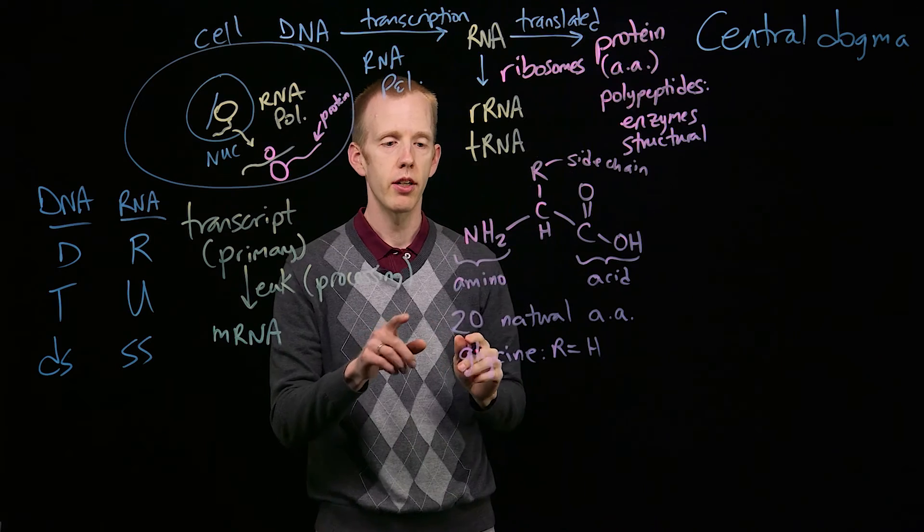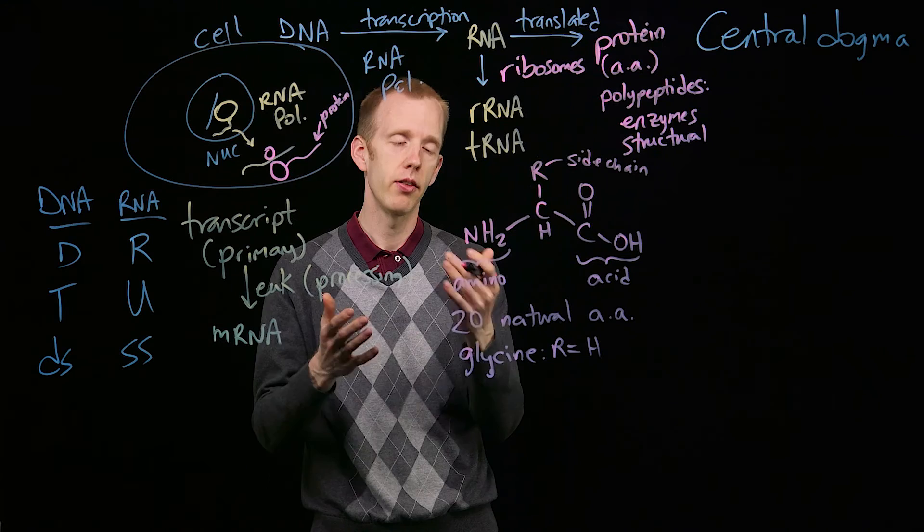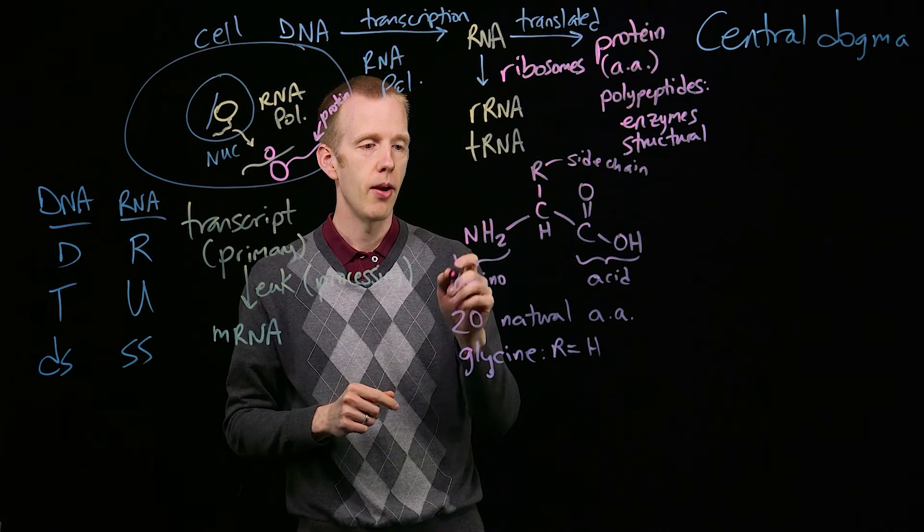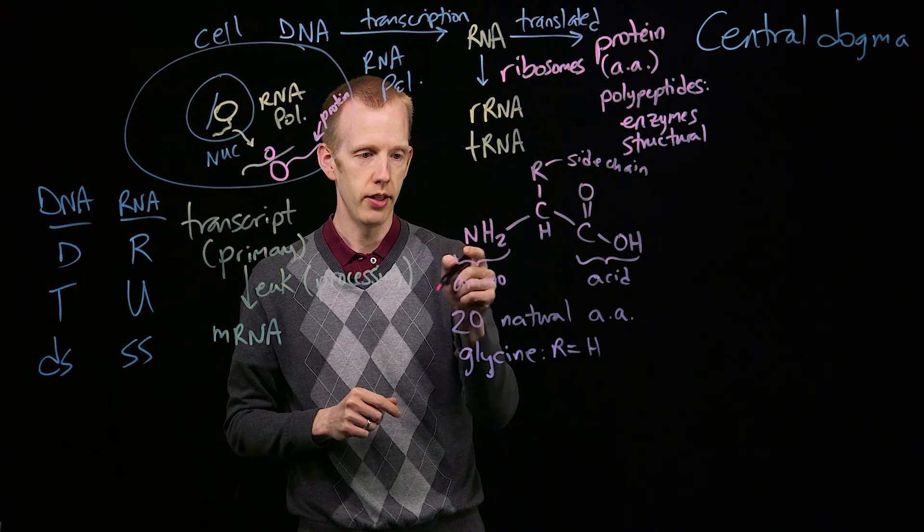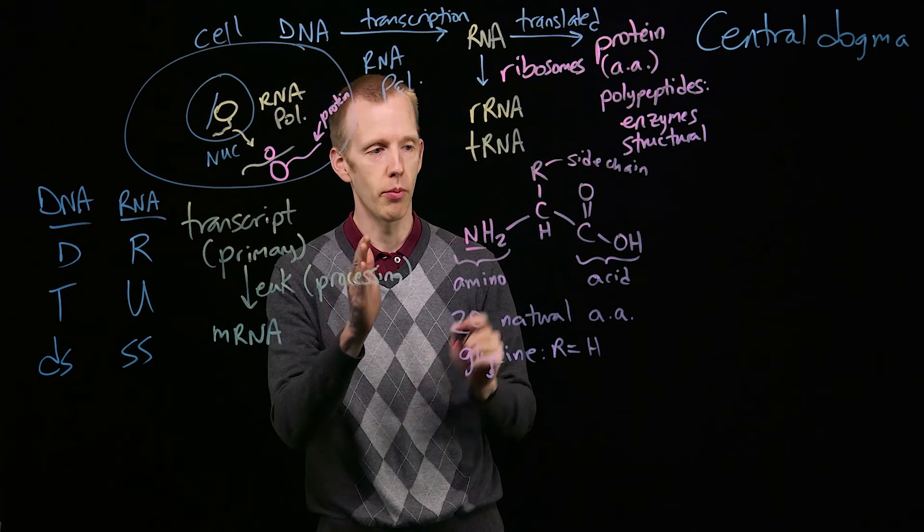And an important thing to note here is that like DNA, which has a 5' and 3' polarity, the same is true for RNA, there's also a polarity in proteins. There's an N-terminus where the nitrogen, or the amino group, is at one end of the protein.